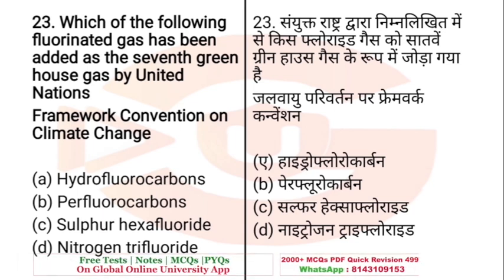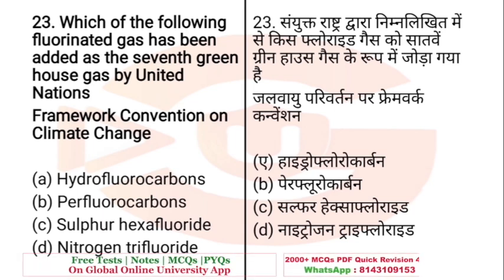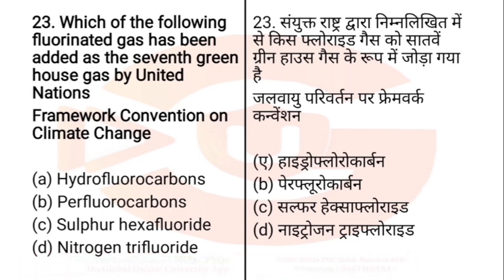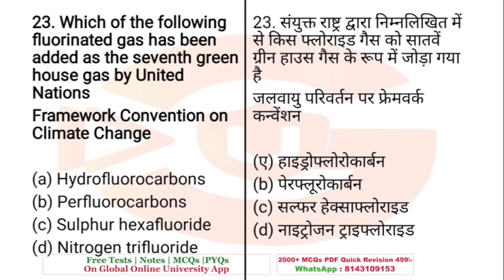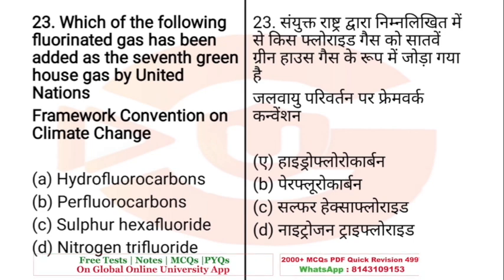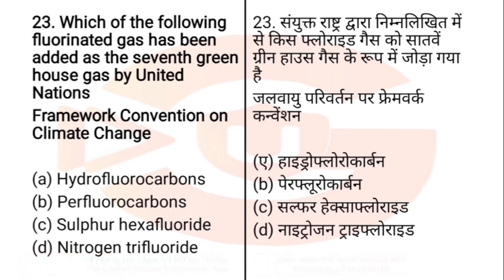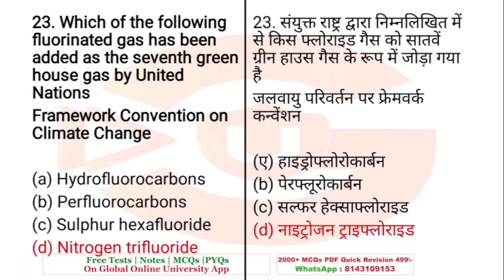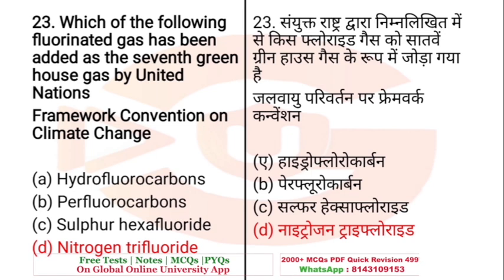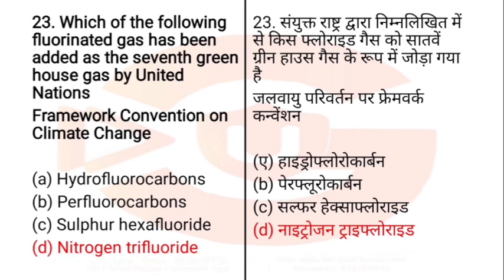Question: Which of the following fluorinated gases has been added as the seventh greenhouse gas by the United Nations Framework Convention on Climate Change? The right answer is Nitrogen trifluoride.